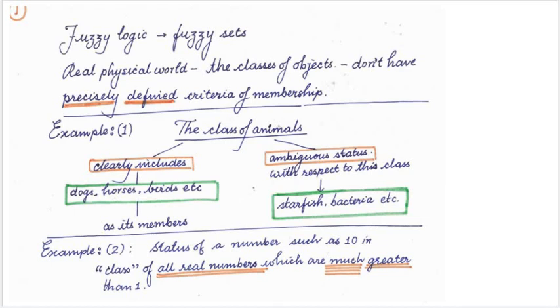But if we go to objects such as starfish, bacteria, and so on, there are other examples also. Then with respect to this class of animals, these objects have got ambiguous status. So this is one example where certain objects don't have clear cut membership in that. Their membership is ambiguous. Their status in that class is ambiguous.